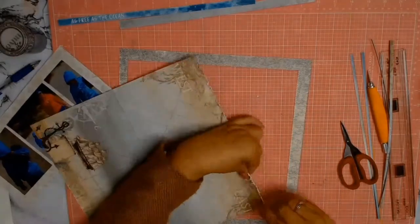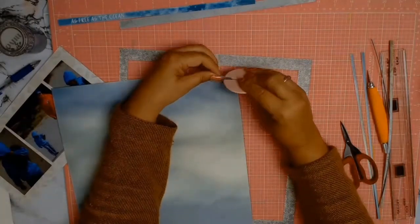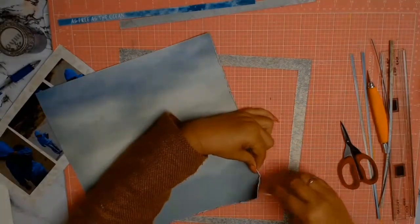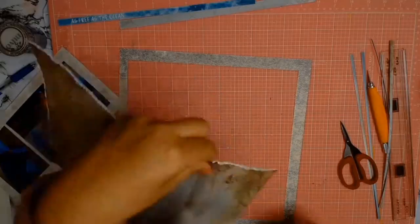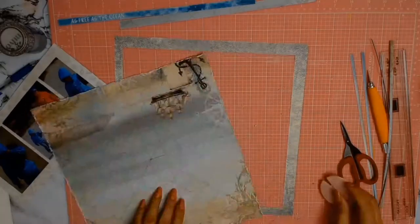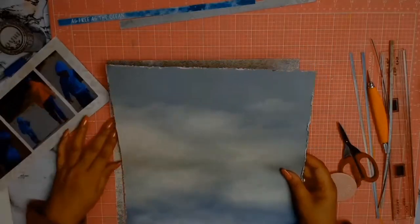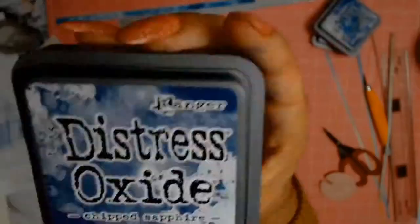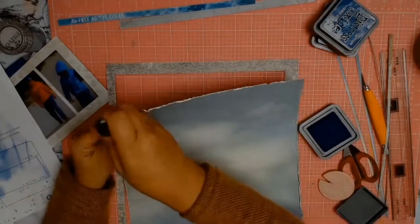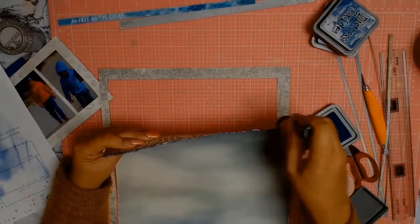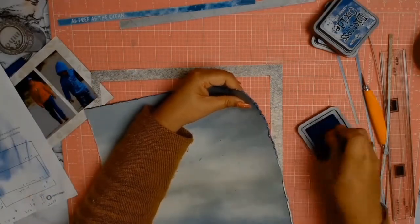Off camera I did my matting, and I'm just going to be using a distressing tool to distress all four edges. If you don't have one of these little gadgets, don't worry, your scissors will do just fine to rough up your paper. I'm going to do one of my favorite little things and that's to ink my edges, and this time around I chose the color Chipped Sapphire from my distress oxide.